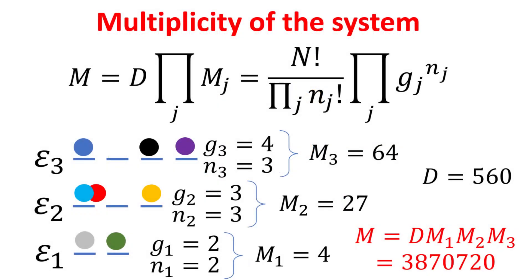The total multiplicity M of our classical system of distinguishable particles is given in terms of the number of particles nj distributed across the different ej energy levels, where the degeneracy for level j is denoted as gj. The total multiplicity M is then given by the multiplicity D, which denotes the number of ways of distributing nj particles across the different ej energy levels, multiplied by the product of all the Mj, which denotes the number of ways of arranging the nj particles within each ej level.